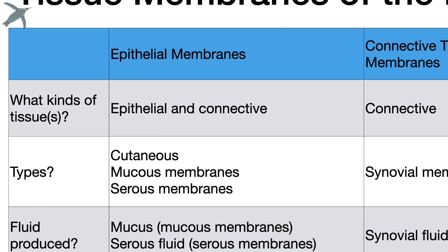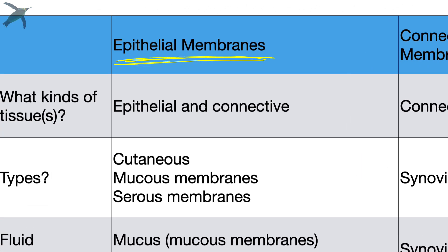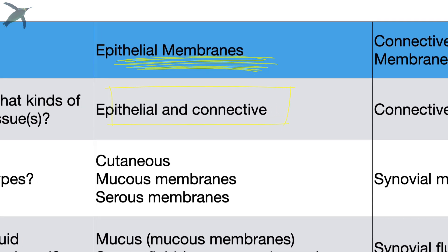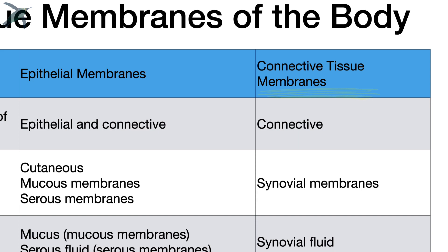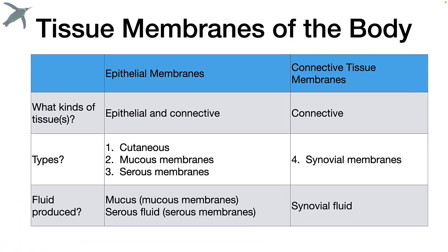We classify epithelial membranes as those that contain both epithelial and connective tissue. Connective tissue membranes don't have the epithelia — they only contain connective tissues.